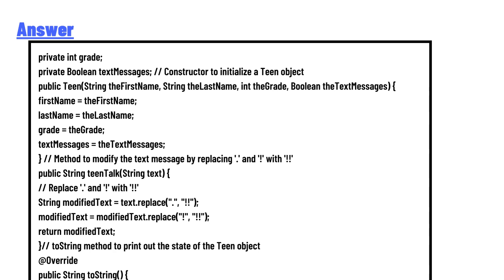The constructor initializes firstName, lastName, grade, and textMessage attributes. The teenTalk method uses the String replace method to replace occurrences of 'and' with 'i'. Note that the replace method is used twice: first to handle 'and' and then to handle ensuring all instances are replaced. The toString method returns a string representing the Teen object showing first name, last name, and grade. This code will transform the text as required and provide a correct textual representation of the Teen object.